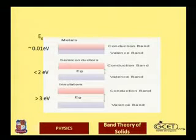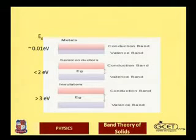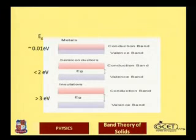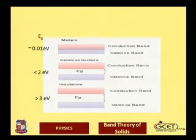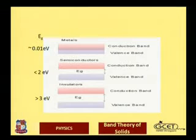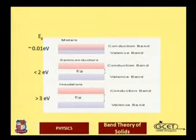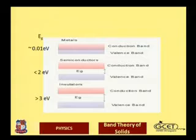Free electrons in the conduction band will easily carry current in the outer circuit. In semiconductors, the energy gap is less than 2 eV, and as temperature increases, resistance decreases, giving them a negative temperature coefficient. With sufficient energy, electrons can move to the higher conduction level.